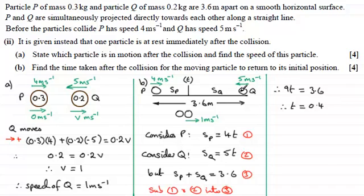So now I can work out what that distance sq is. So if I substitute this value back into equation 2, then I've got that therefore sq must be equal to 5 times 0.4. 5 times 0.4 gives me 2. So I know that we've got our distance here of 2 metres.